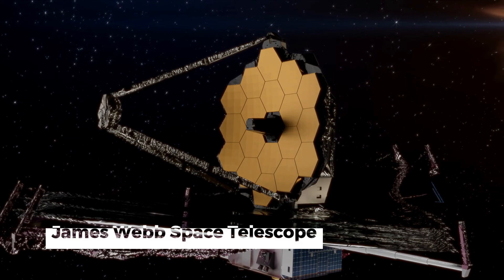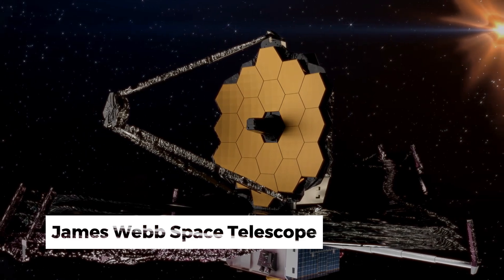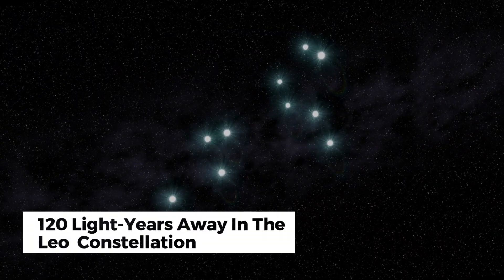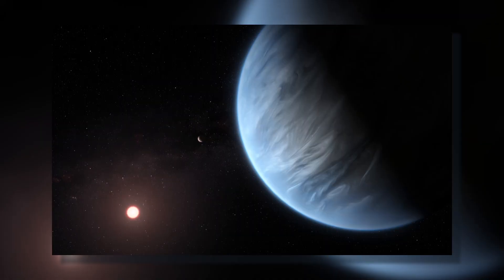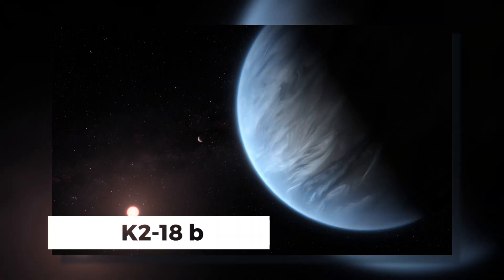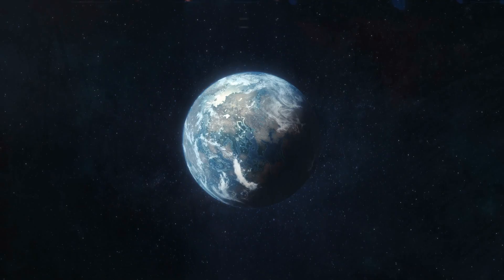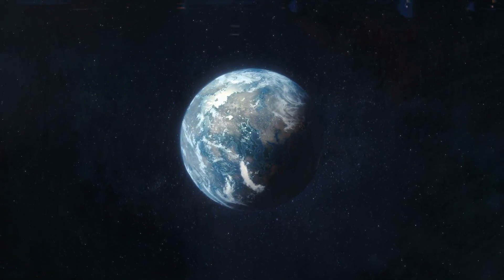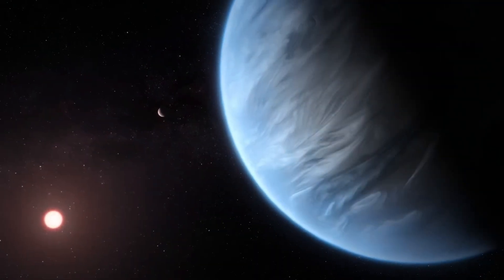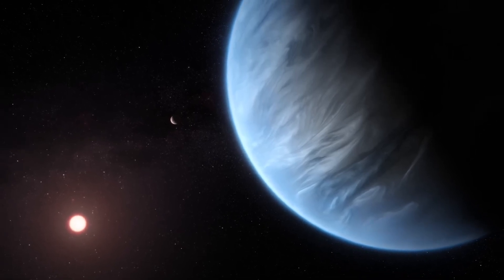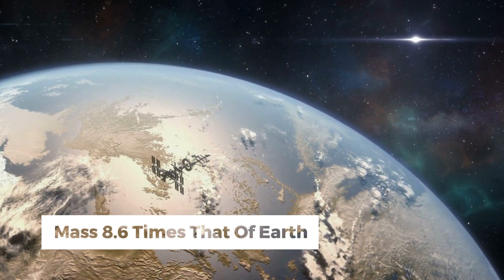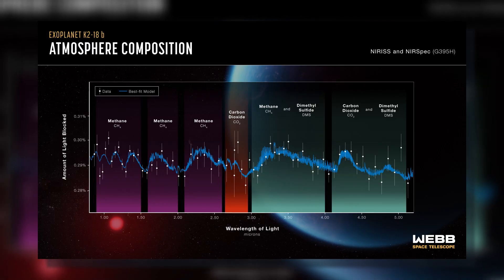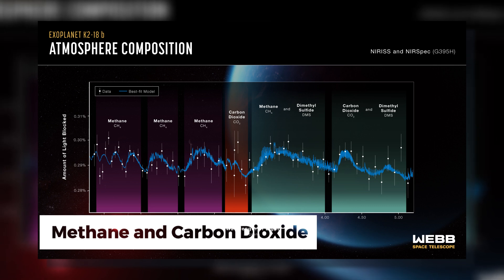This remarkable observation was made using the James Webb Space Telescope, which gazed 120 light-years away in the Leo constellation. Scientists named the exoplanet K218b. It has a mass 8.6 times that of Earth and detected carbon-rich compounds, including methane and carbon dioxide.